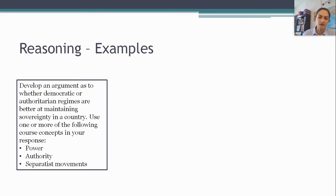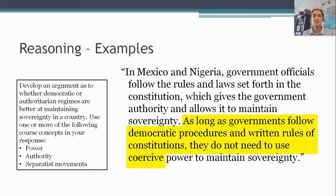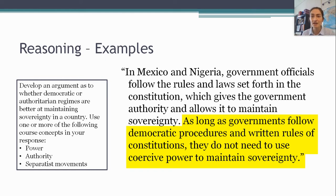The next thing you have to do — and in my opinion a harder but also more important thing — is take that evidence and explain how it supports your thesis. This is how we go beyond fourth-grade-level writing to something approximating what you should be doing in an allegedly college-level course. Let me take two of these examples and walk you through how you would do that reasoning. I might take the relatively less specific piece of evidence about Mexico and Nigeria having written constitutions, and then write: 'As long as governments follow democratic procedures and written rules of constitutions, they don't need to use coercive power to maintain sovereignty.' You could string this out a bit longer, but this sentence alone is going to be enough — it's the minimum bar.